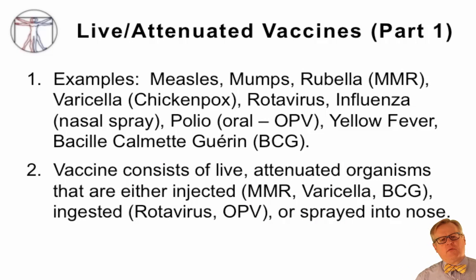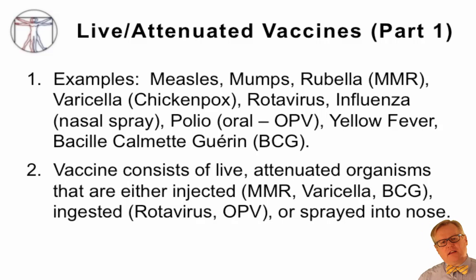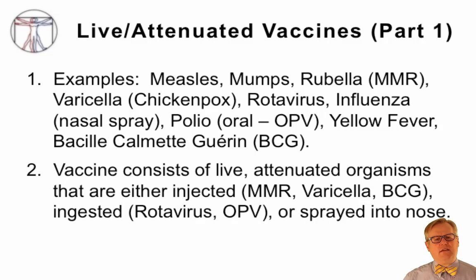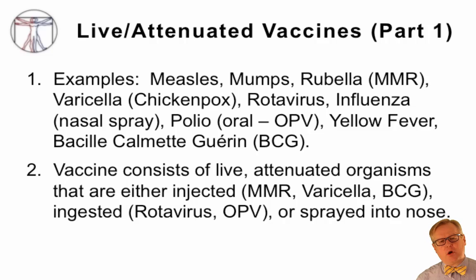The last type is live attenuated vaccines. Examples include the measles, mumps, rubella (MMR) vaccine, the varicella (chickenpox) vaccine, the rotavirus vaccine, the intranasal influenza vaccine, the oral polio vaccine, the yellow fever vaccine, and the BCG vaccine.